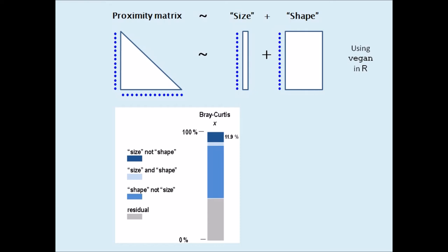From the top there is the part due to size after partialing out shape, then the part confounding both of them in light blue, then the part due to shape after partialing out size, and finally the unexplained residual part. The part due to size is 11.9% of the total Bray-Curtis variance.